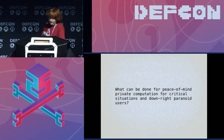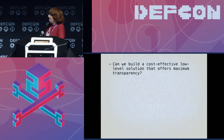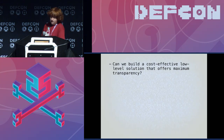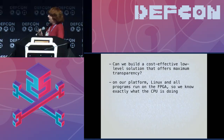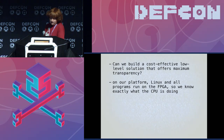Can I build a cost-effective, low-level solution that offers maximum transparency? On our system, I have Linux running on an FPGA along with some other chips, so I know exactly what my CPU is doing.